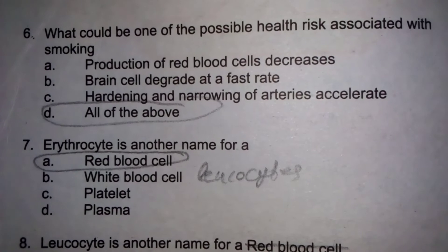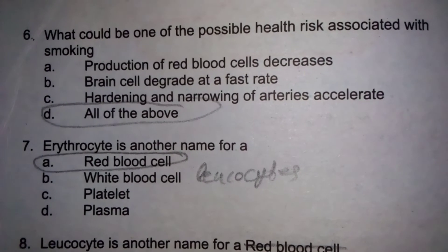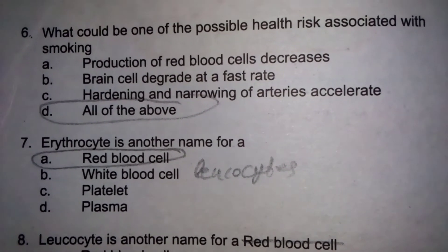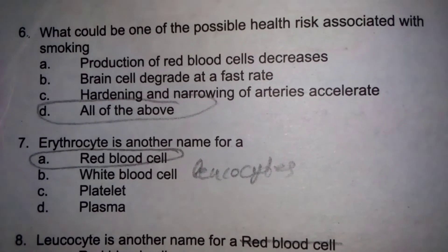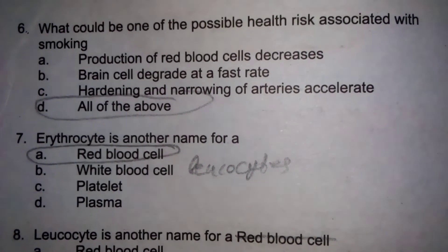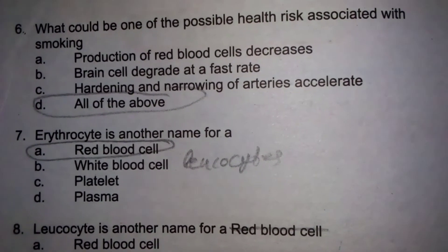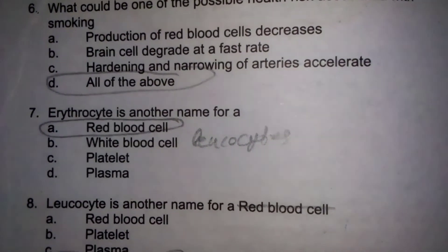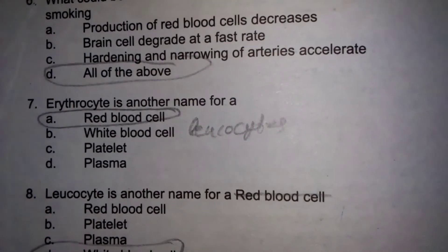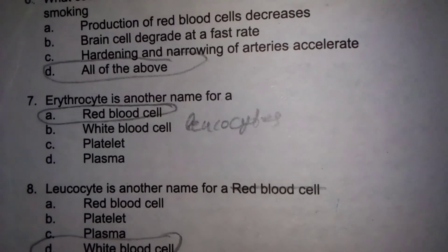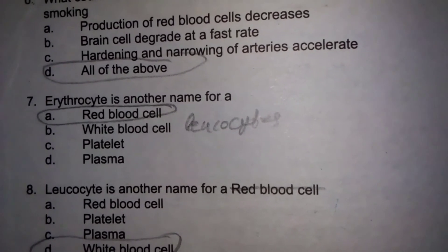Smoking کی وجہ سے: production of red blood cells decreases, brain cells degrade at a fast rate, and hardening and narrowing of arteries accelerates۔ Erythrocyte is another name for red blood cells.